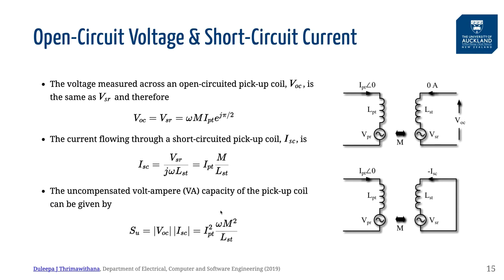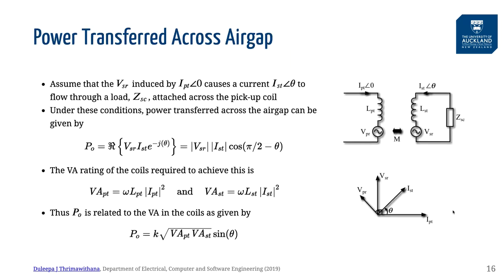The open circuit voltage and the short circuit current of a pickup coil can be used as a measure of the power transfer capability of an IPD system. However, we can more accurately describe the power transfer across the air gap using the coupled inductor model. The power received by the pickup coil is simply VSR times the current ISD times the power factor angle between them. We can simplify this to relate the power transfer to the VAs in each coil.